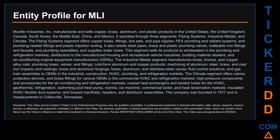The Industrial Metals segment manufactures brass, bronze, and copper alloy rods, plumbing brass valves and fittings, cold-form aluminum and copper products, machined aluminum, steel, brass, and cast iron impacts and castings, brass and aluminum forgings, brass, aluminum, and stainless steel valves, fluid control solutions, and gas train assemblies for OEMs in the industrial, construction, HVAC, plumbing, and refrigeration markets. The Climate segment offers valves, protection devices, and brass fittings for OEMs in commercial HVAC and refrigeration markets, coaxial heat exchangers, insulated HVAC flexible duct systems, and brazed manifolds. The company was founded in 1917 and is headquartered in Collierville, Tennessee.